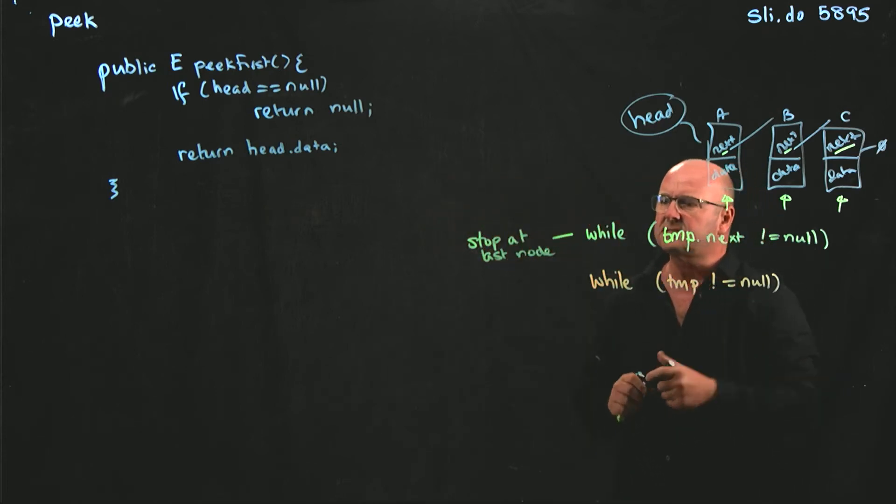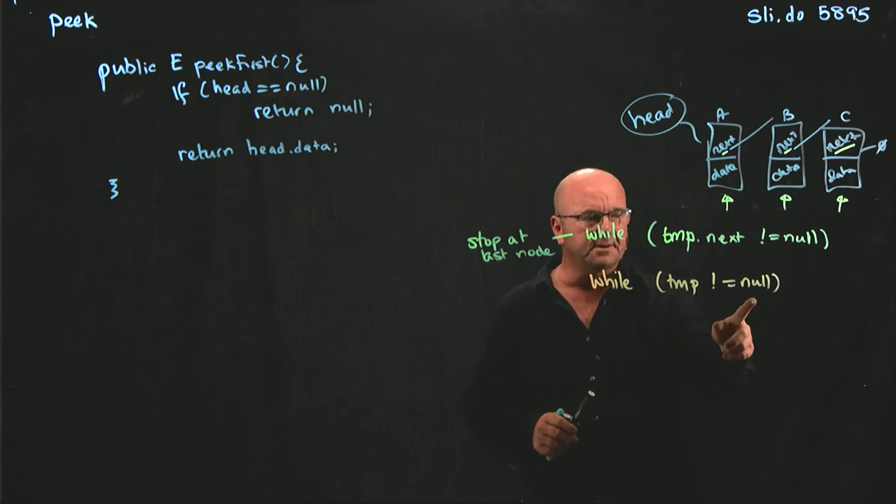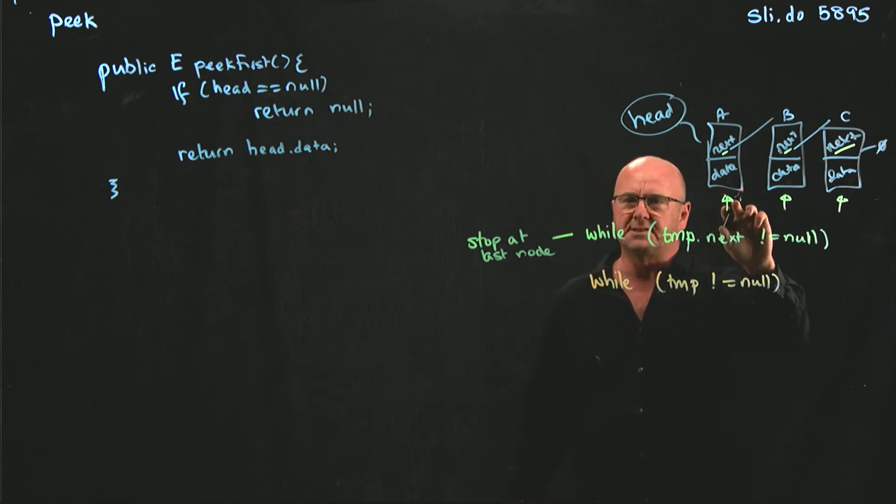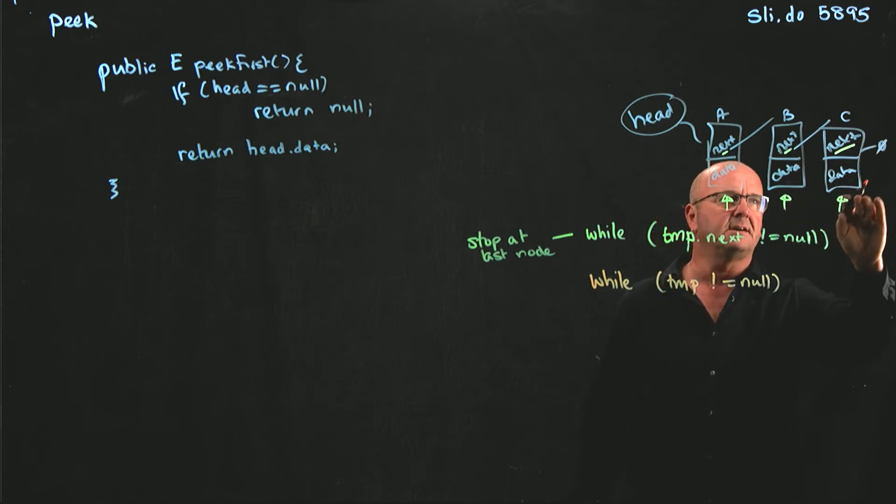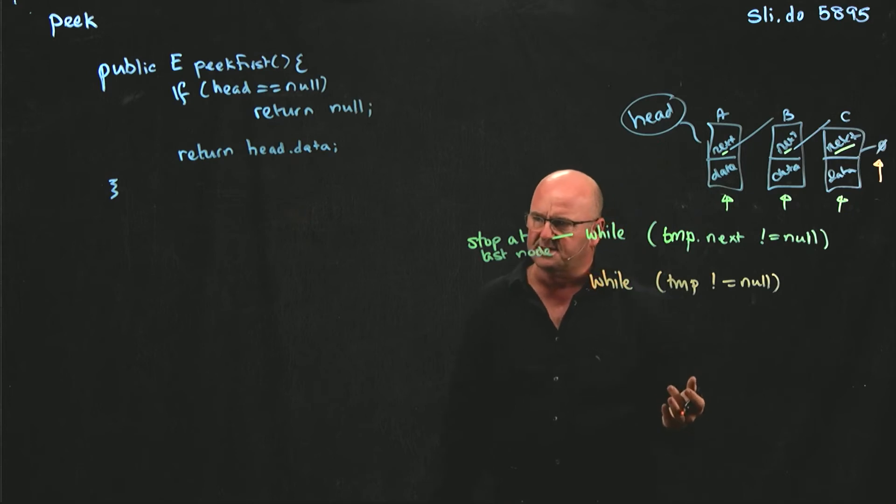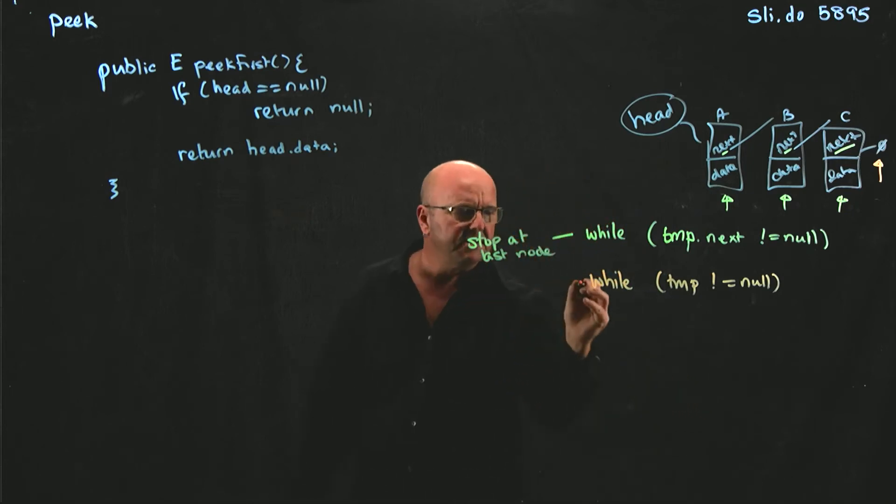In the second case, when we're checking for temp not equal to null, temp is not null here, temp is not null here, temp is not null here. Temp is null when we go past the last node. So in this case, we go past the last node.